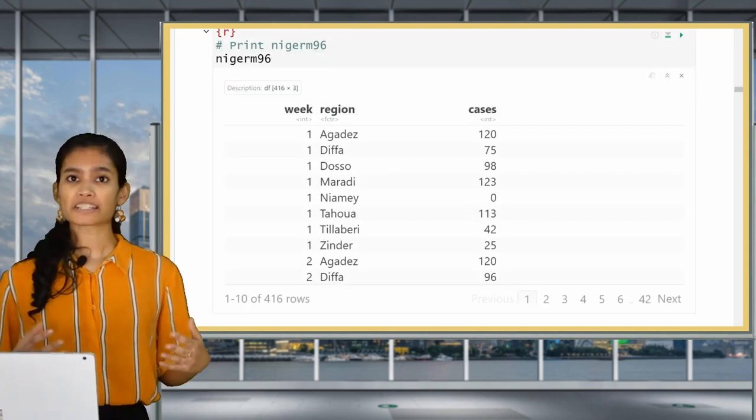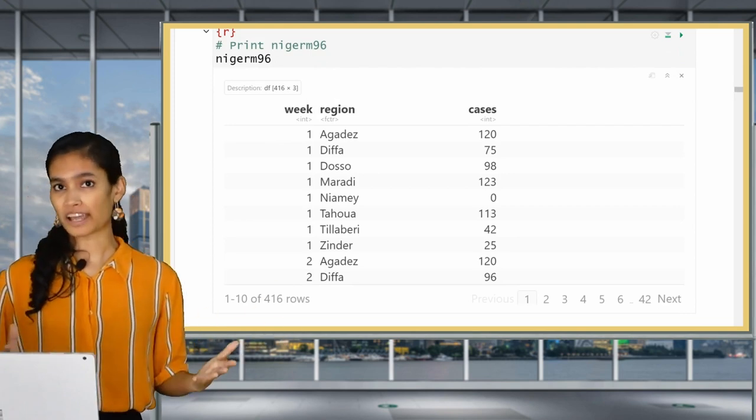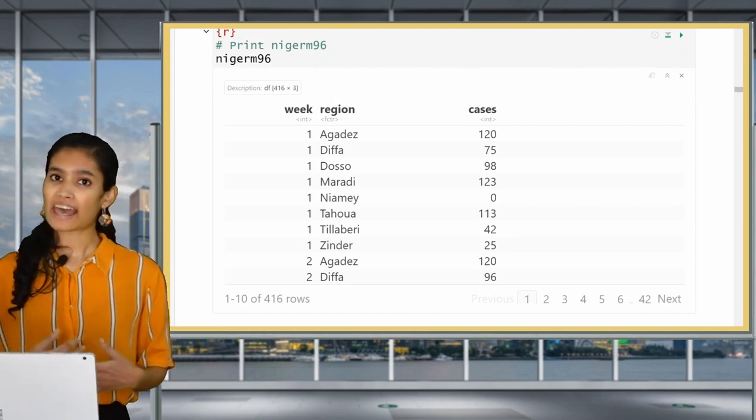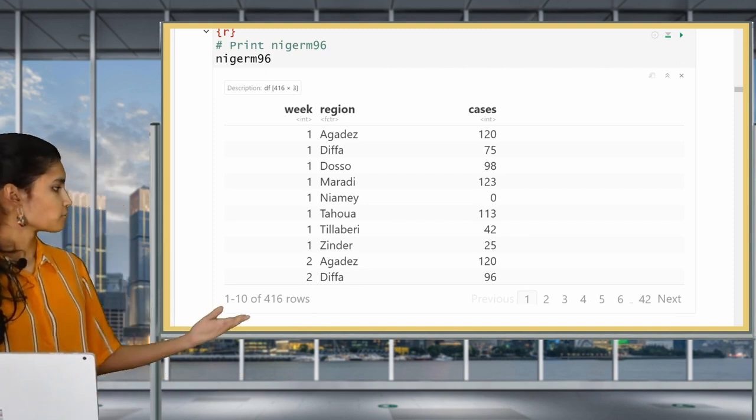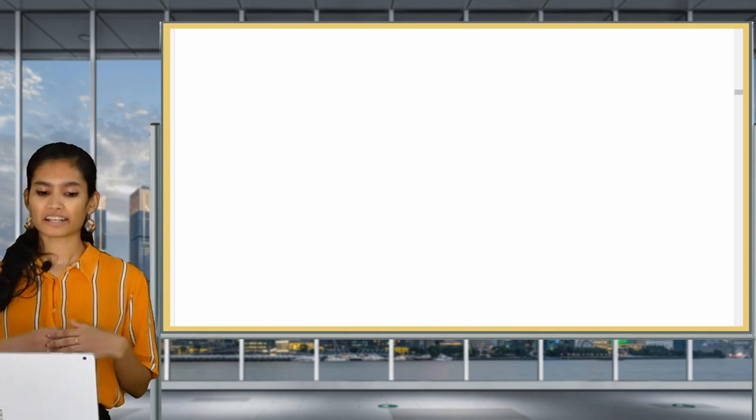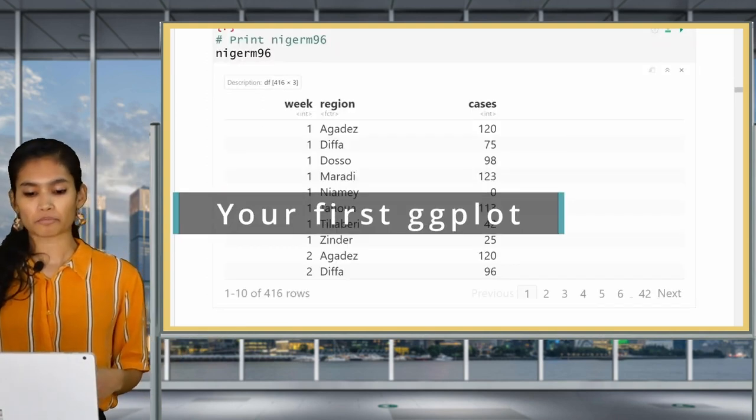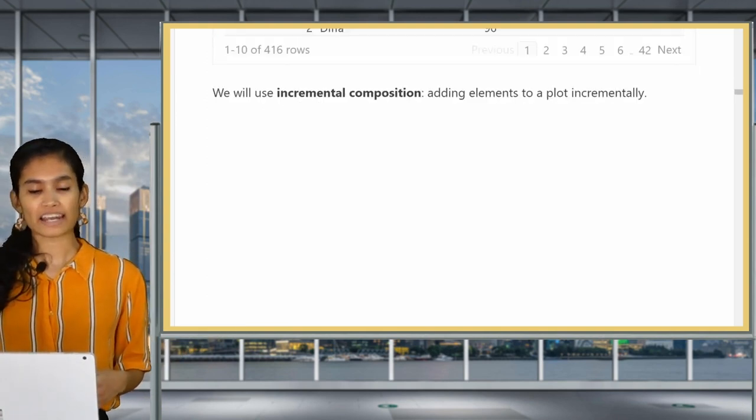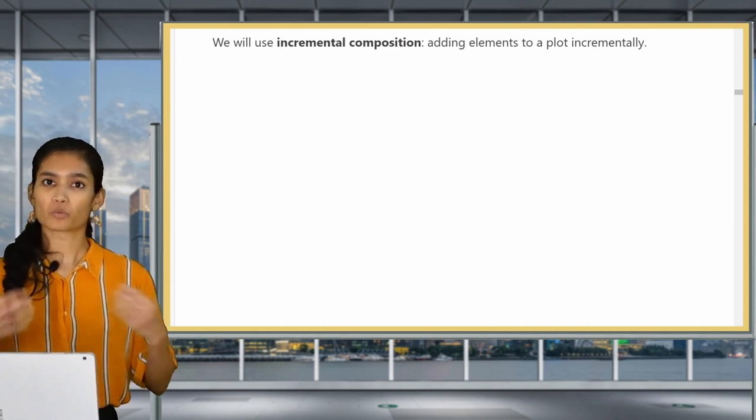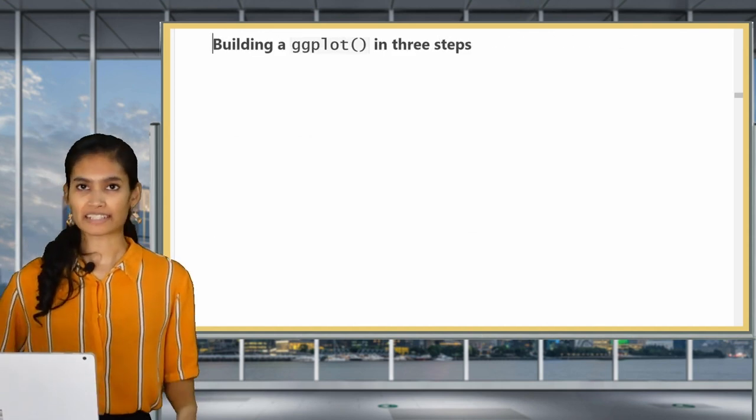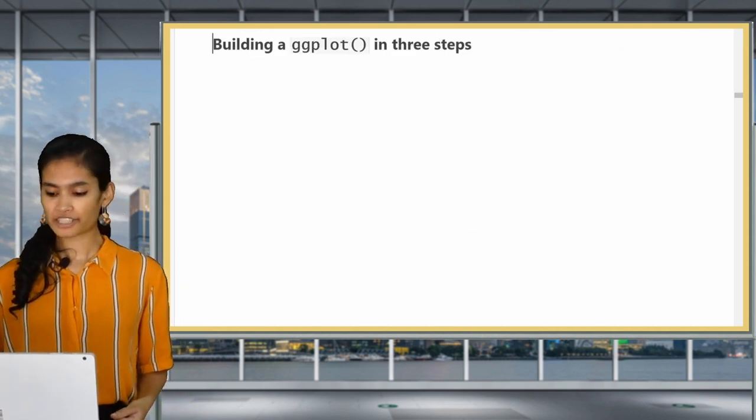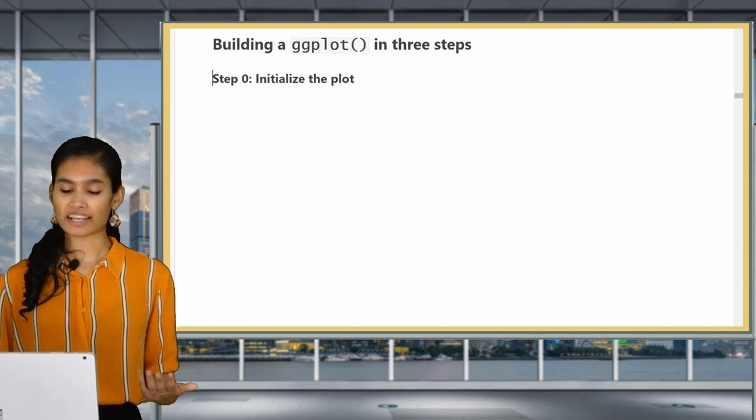Let's take a quick look at Niger M96. If you print this, you'll see that the year column is no longer present since we're only having one year, 96, and we've gone from over 4,500 rows to just 416. Now that our dataset is ready, we can plot our ggplot in increments. We're going to add elements one at a time so that you know what each layer is doing.